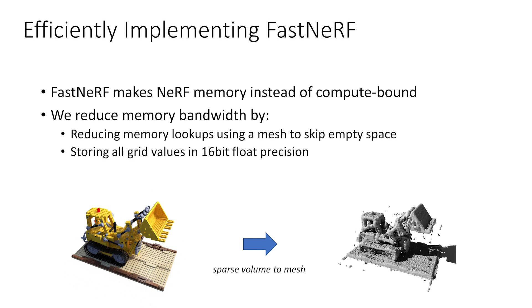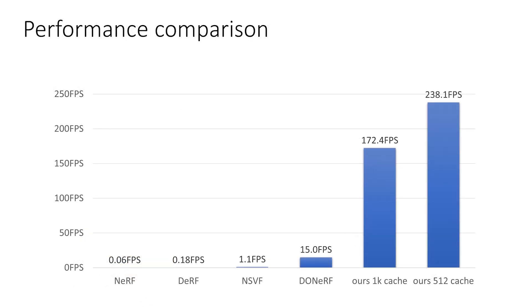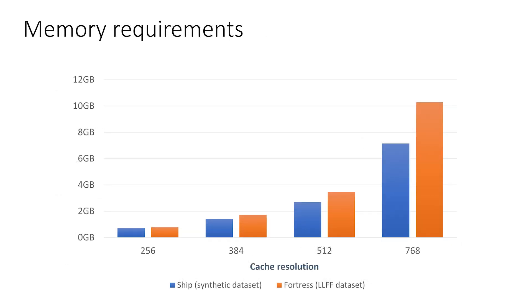In addition to reducing the amount of required cache lookups, we compress all grid values to 16-bit float, which we found to have no significant impact on our results. Here we show a performance comparison of FastNeRF rendering a single 800x800 pixel image. Even using a cache resolution of 1024 for the deep radiance map cache, our method can achieve well over 100 frames per second on a single RTX 3090 GPU. At the time of writing, this was at least an order of magnitude ahead of competing methods. We generally find that caches at 512 resolution of reasonably sparse scenes fit in under 4GB of GPU memory when values are compressed to 16-bit float.